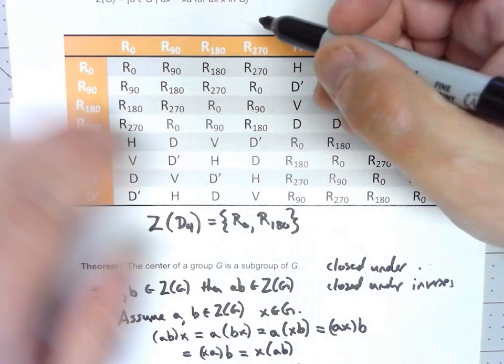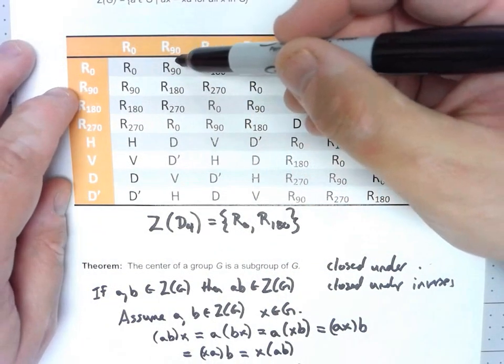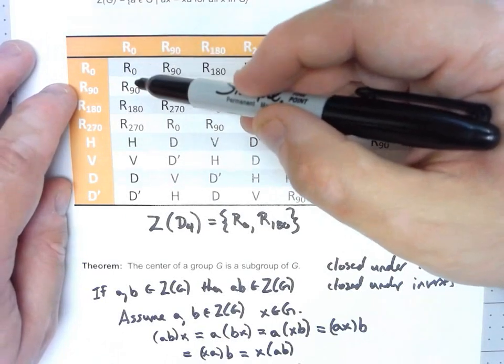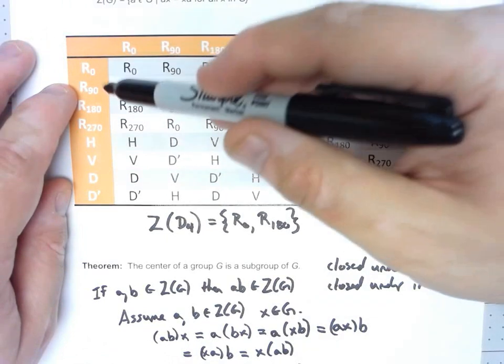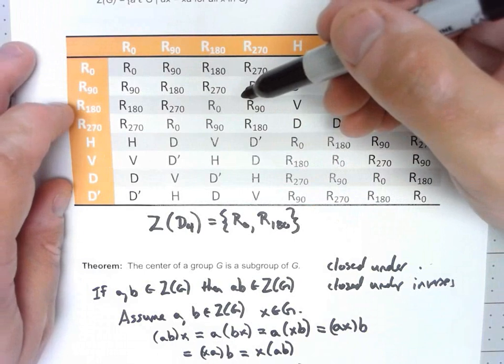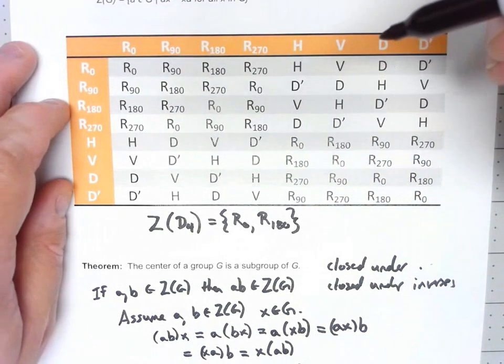We're specifically looking at R90, but R90 times R0 is R90. R0 times R90 is R90. R90 times R90 is R180. Of course that's reversed. R180 times R90 is R270. R90 times R180 is R270.